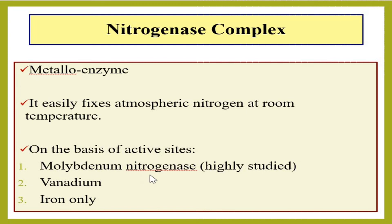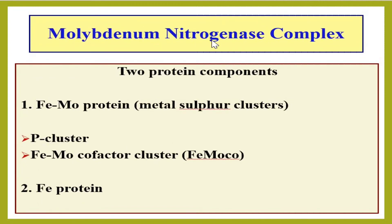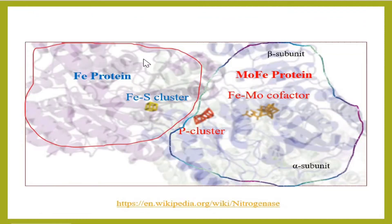Among the three types, molybdenum nitrogenase is the most studied. The molybdenum nitrogenase complex is made up of two protein components: FeMo protein and Fe protein. The FeMo protein component has two clusters — the P-cluster and the FeMo cofactor (also represented as FeMoco).